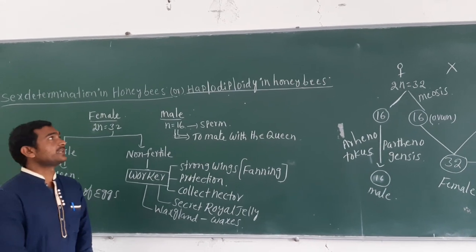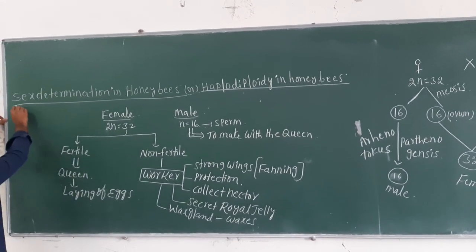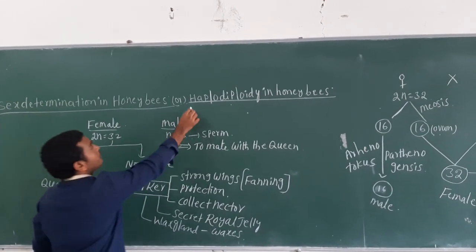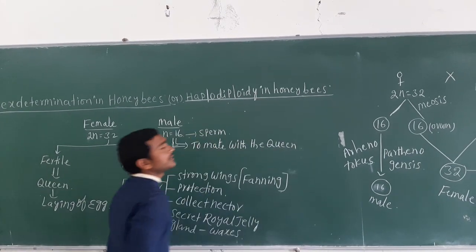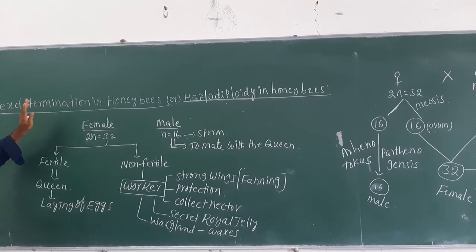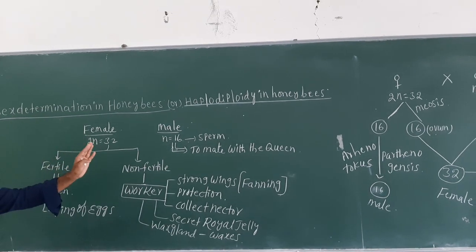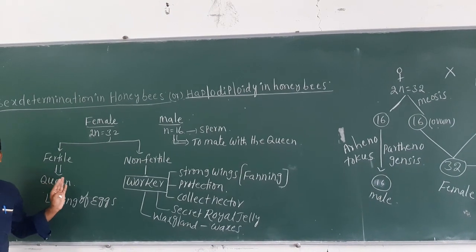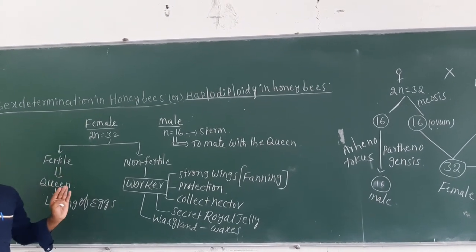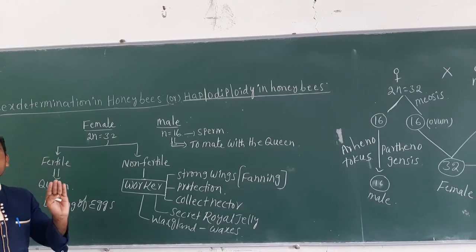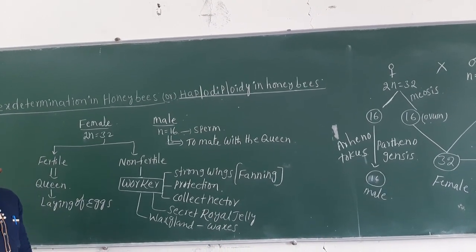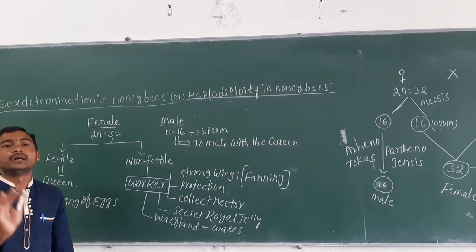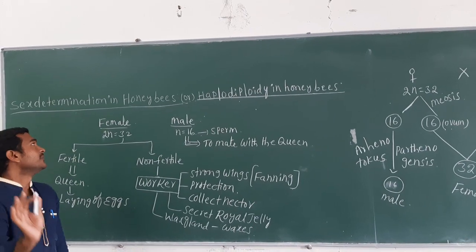Today we are going to explain sex determination in honeybees, also called haplodiploidy type of sex determination. Sex determination in honeybees is different compared to other organisms because it depends upon chromosome numbers.